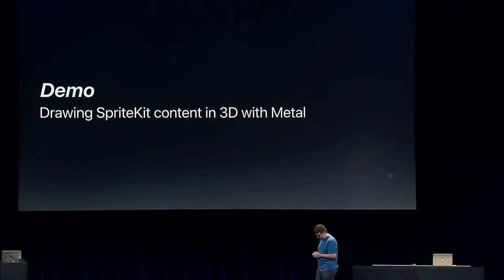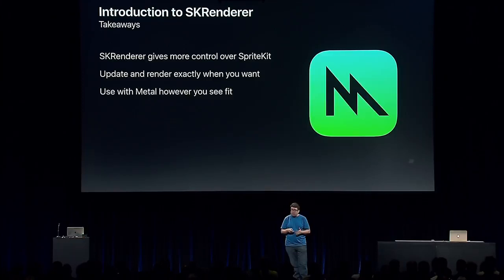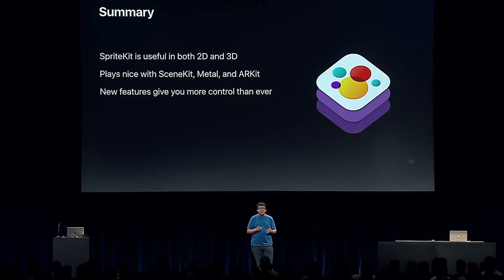SKRenderer gives you more control over SpriteKit than ever before — you determine exactly when it updates and renders, and by interacting directly with Metal, you can use rendered SpriteKit content any way you see fit. As you've seen today, SpriteKit is useful in both 2D and 3D. It's built to work well with other graphics frameworks like SceneKit and Metal, and is closely integrated with ARKit so that creating augmented reality apps is as easy as possible. New features give you more control, including the view debugger and SKRenderer.